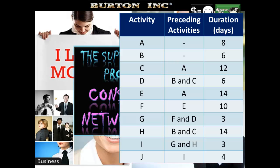We've got our activities here, A through to J, and the duration in days on the right hand side. Preceding activities: C can't begin until A is completed. D can't begin until B and C are completed.